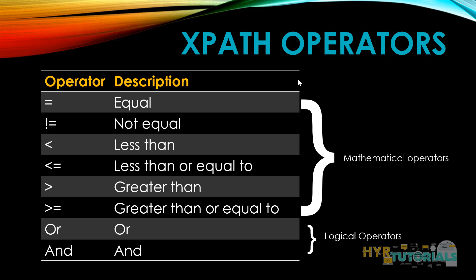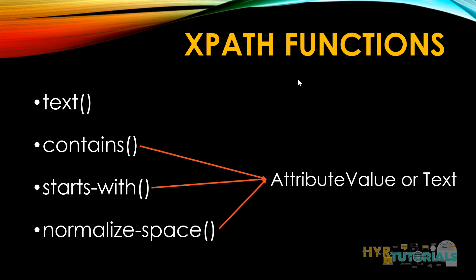The next one is XPath functions. I have listed a few XPath functions which will be used mostly in our applications: text(), contains(), starts-with(), and normalize-space(). We have already seen the text() method. The next one is contains(). In these three methods — contains(), starts-with(), and normalize-space() — we have an option to use either attribute value or text. Now we'll see how we can use the contains() method.